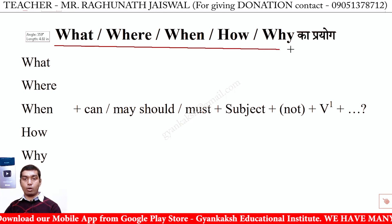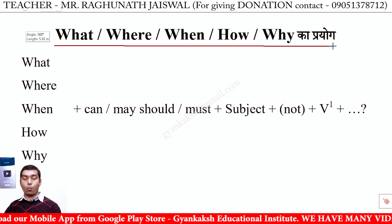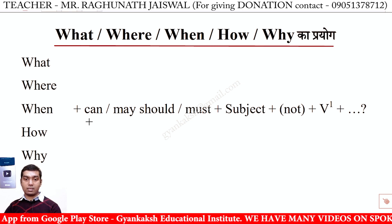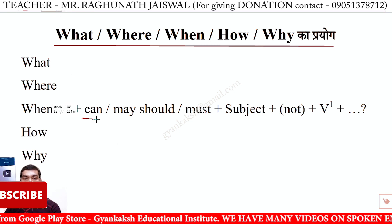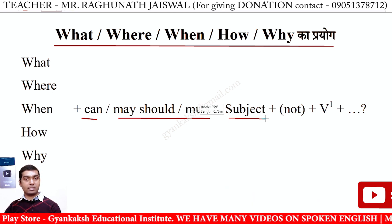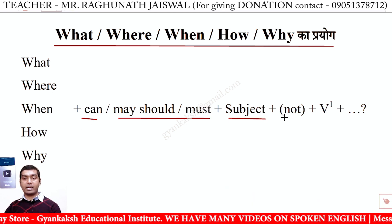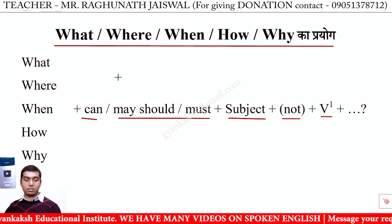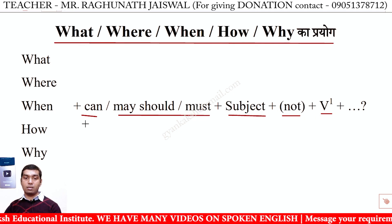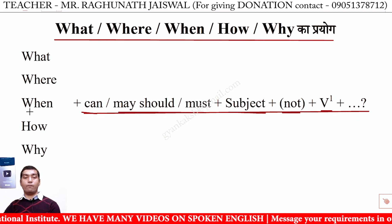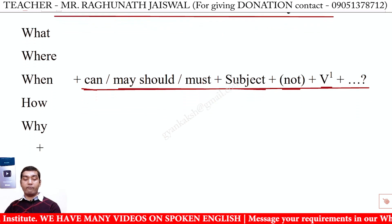यहाँ पर हम लोग what, where, when, how, why का प्रयोग किये हैं। Structure क्या है? — can, may, should, और must में से कोई एक, उसके साथ subject, अगर negative sentence है तो not, फिर verb का first form और other words। सबके साथ यही structure रहेगा, चाहे वो what हो, where हो, when हो, how हो, या why।